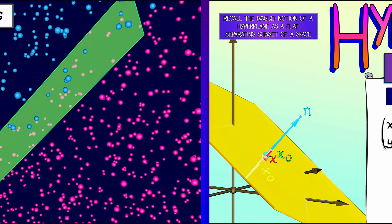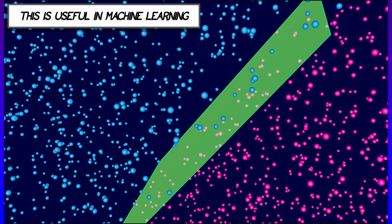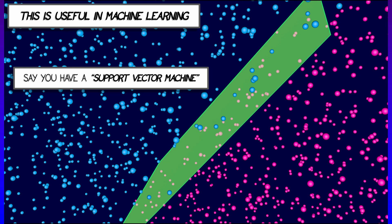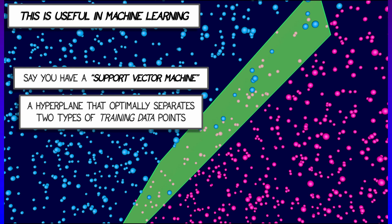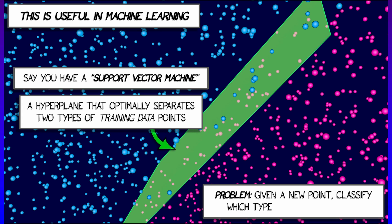Now this is incredibly useful in machine learning where hyperplanes come under the name of support vector machines. Again, these are hyperplanes that separate two types of training data. So I have this type of data point and that type of data point. With this hyperplane, what I can do is test a new data point where I don't know on which side of the hyperplane it lies.